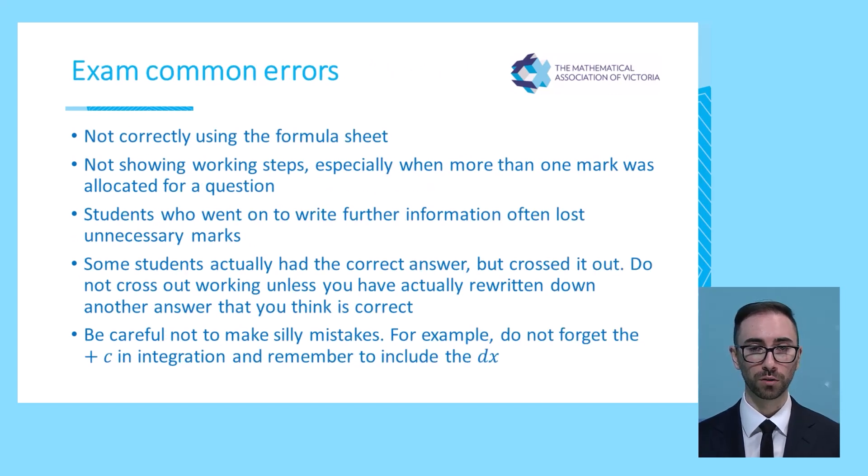Some common errors that pop up in both exams are that students do not correctly use the formula sheet, such as choosing the wrong trig identity. Not showing the working out steps, particularly when there's more than one mark available in a question. Students who go on to write further information may often lose marks, because if there's further engagement where they produce wrong information, then that will produce incorrect working and therefore be at risk to miss out on a mark. If you decide to cross out your work, it will not be read. So if you decide to cross out work, make sure that you replace it with something that you feel confident is correct. And finally, do not make silly mistakes. For example, don't forget to include the plus C when doing integration, or including a DX or a DT when performing integration as well.